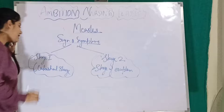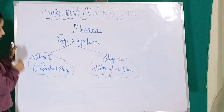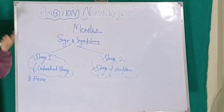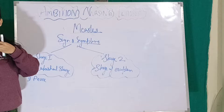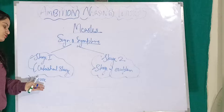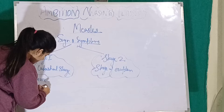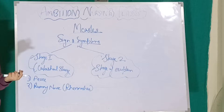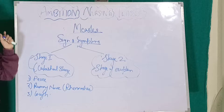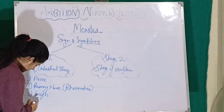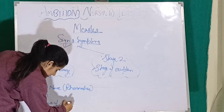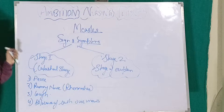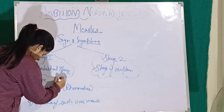In stage one (catarrhal stage), the signs and symptoms seen are: first, fever — because when any infection occurs, our body works against it and body temperature increases, which we call fever. Second is runny nose, which in medical terms we call rhinorrhea. Next is coughing. The rashes appear mainly on the face or over the mouth — appearance of rashes over the mouth. And lastly, watering eyes.